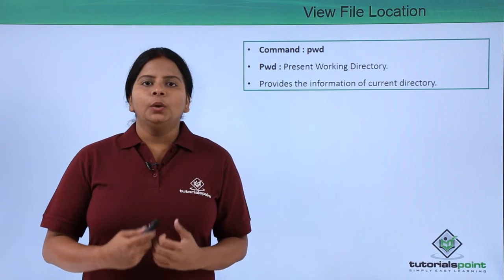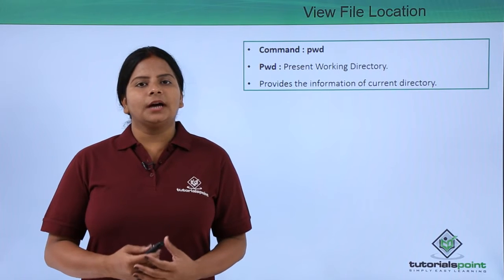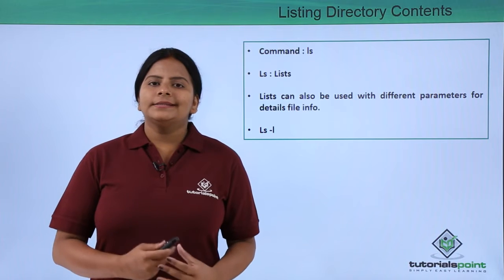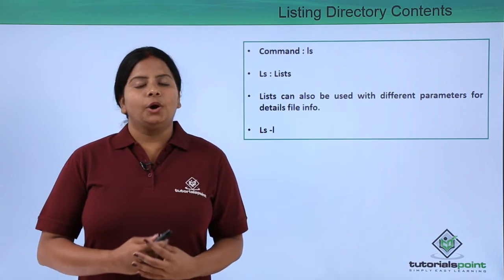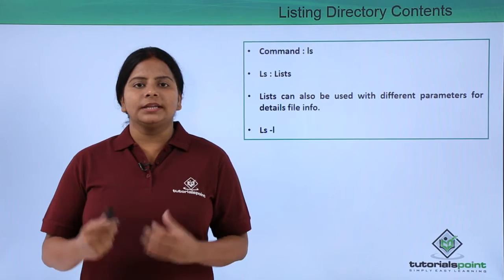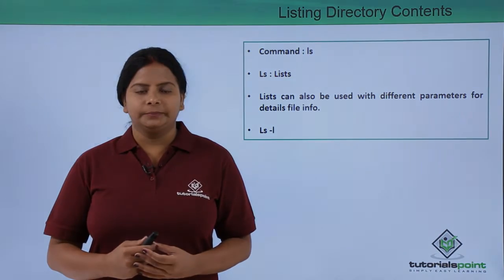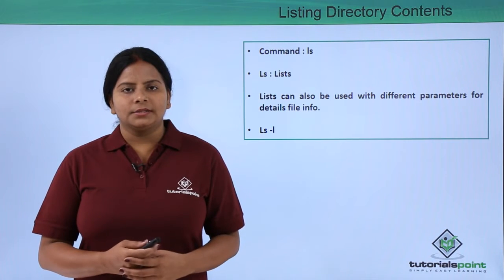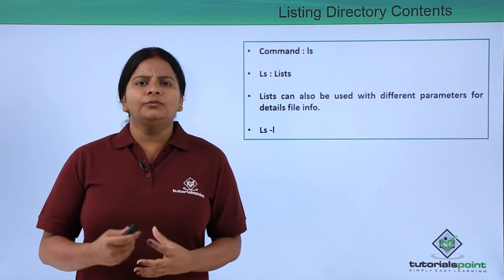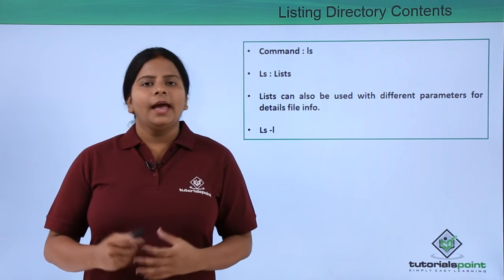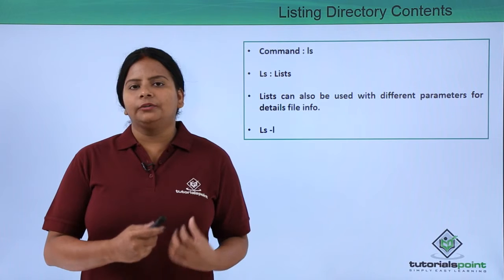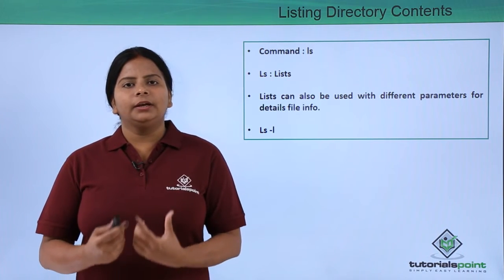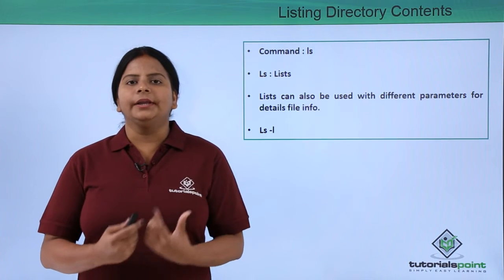If I want to check which directories and files are located in my current directory, I can use the LS command. LS stands for list — it lists all the directories and files in the directory where you are located. It shows only the names of the directories and files. Directories appear in blue color in the terminal, and files appear in white or black color.